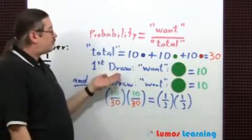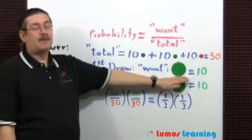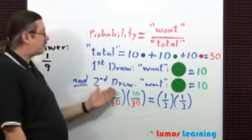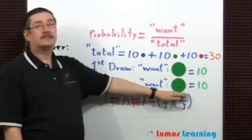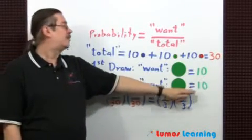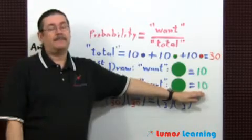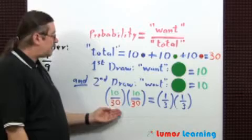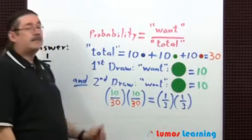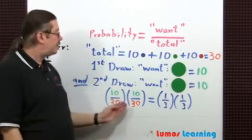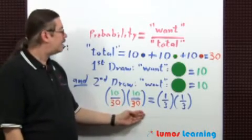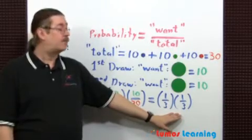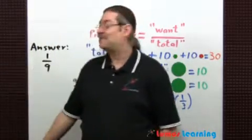For the first draw we want a green marble. How many ways can we do this? Ten. And for the second draw we want a green marble again. There are ten ways of doing that because we put the first marble back in the bag. So the probability is just going to be ten thirtieths for the first draw. The word and means multiply probability, so then multiply by ten thirtieths again. We can reduce our fractions to get one third times one third. When you multiply these numbers together, you get the answer of one ninth.